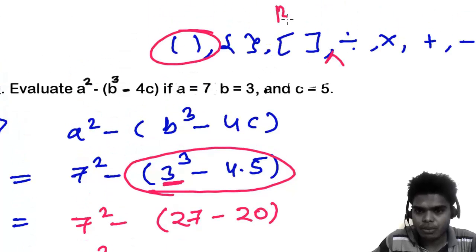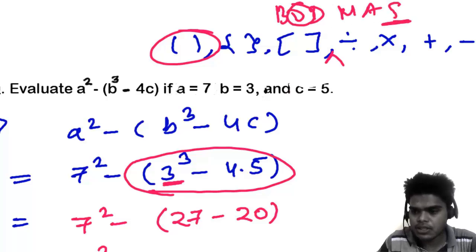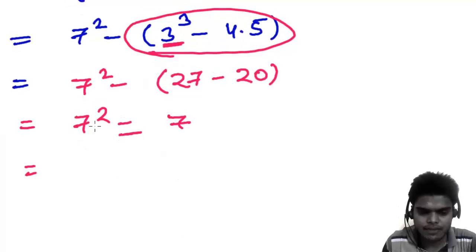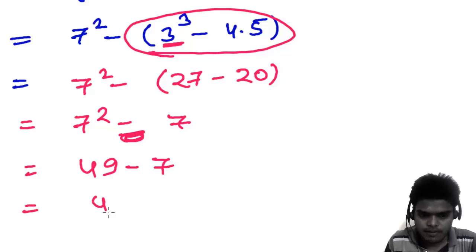Like if you go to BODMAS, subtraction is at last and others comes at first before that, I mean second, second last. So seven square that is 49 minus this is minus 7, so that is 42.